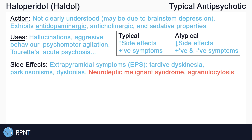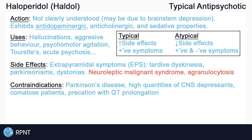In terms of contraindications, avoid use in patients with Parkinson's disease. Symptoms of Parkinson's are caused by the loss of dopamine, and haloperidol exhibits antidopaminergic properties. Avoid use in patients taking high quantities of CNS depressants or patients who are comatose. Haloperidol may cause QT prolongation, which can be seen on an ECG, so precaution should be used if a patient already has QT prolongation.